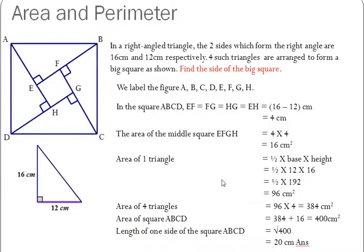In a right-angled triangle, the two sides which form the right angle are 16 cm and 12 cm respectively. So here is our right-angled triangle here. Now the longer side here is 16 cm and the shorter side is 12 cm.